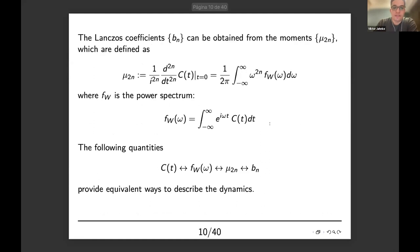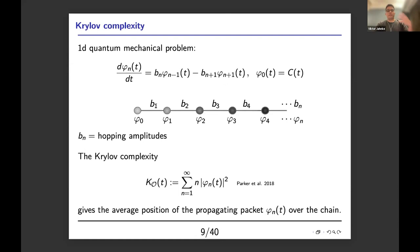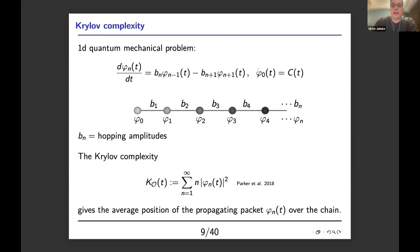Parker and collaborators define Krylov complexity as the average position of the particle along the chain. The basic idea is that if you have a chaotic system, the B_n will grow pretty quickly, and the particle will move through the chain accessing more and more complicated operators in the Krylov basis. The starting point of the recursion relation is φ_0, which is basically the two-point function. From φ_0 you compute φ_1, then φ_2, and so on.